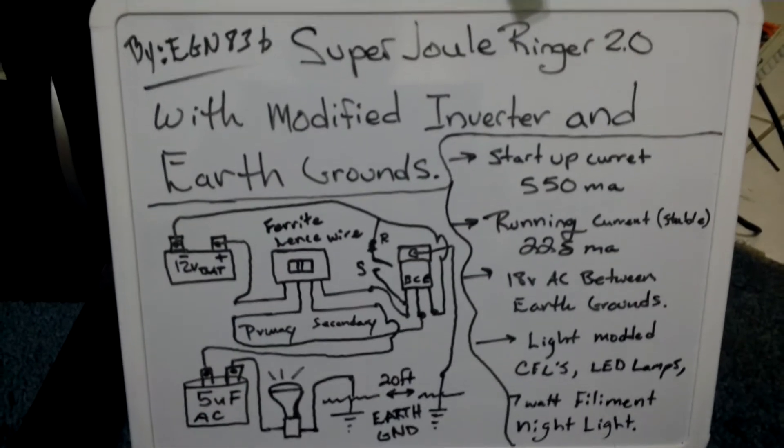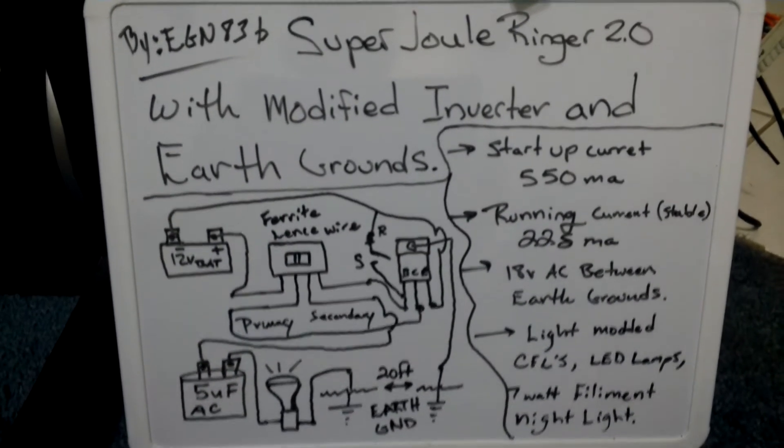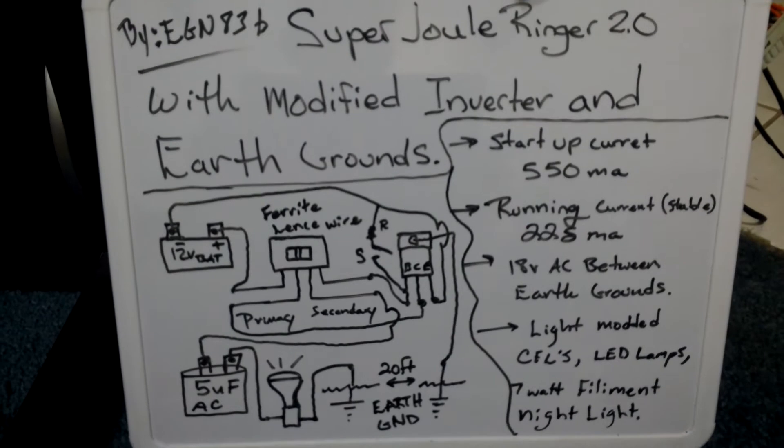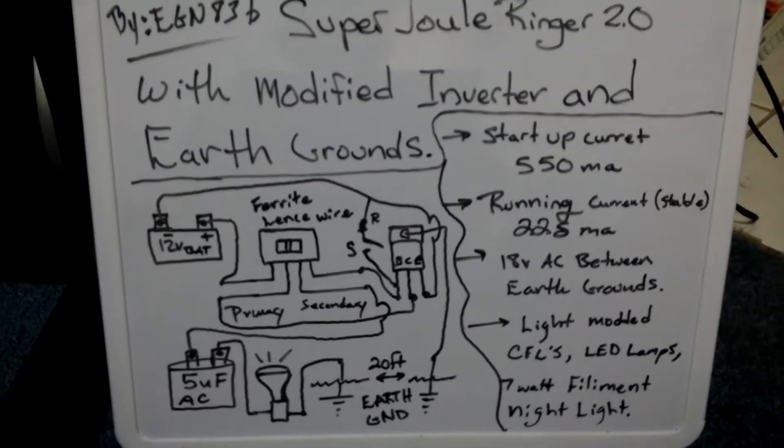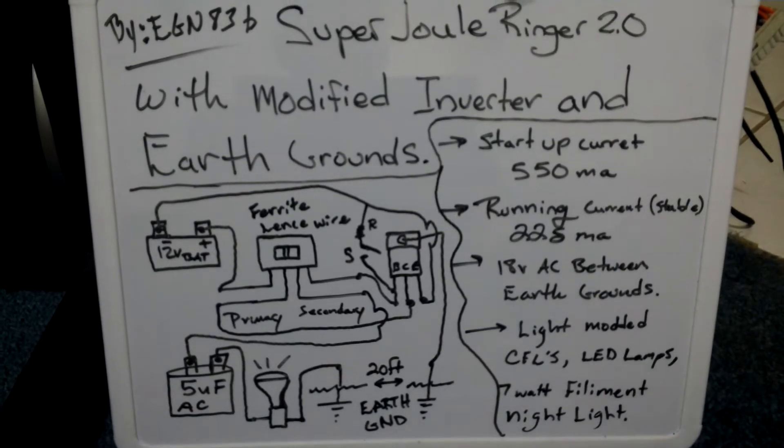As far as this setup goes right here, it runs more efficient than my hand-wound Joule Ringer that I had built in my last video. At a startup current, it's at 550 milliamps.